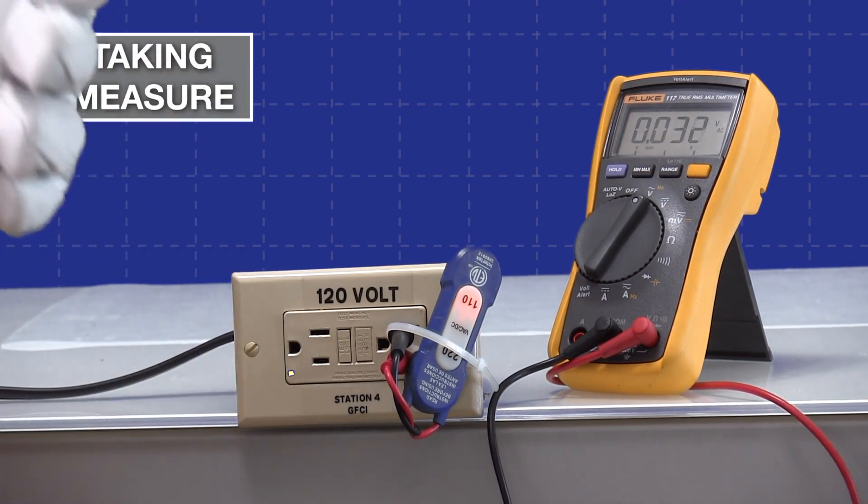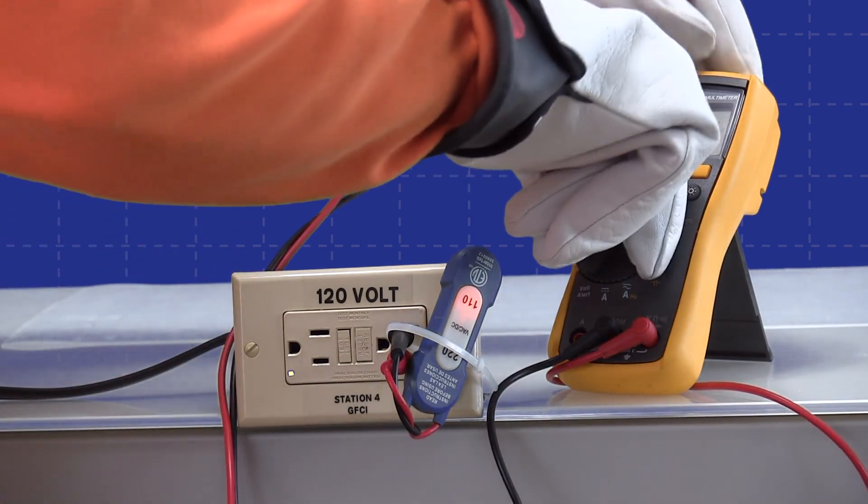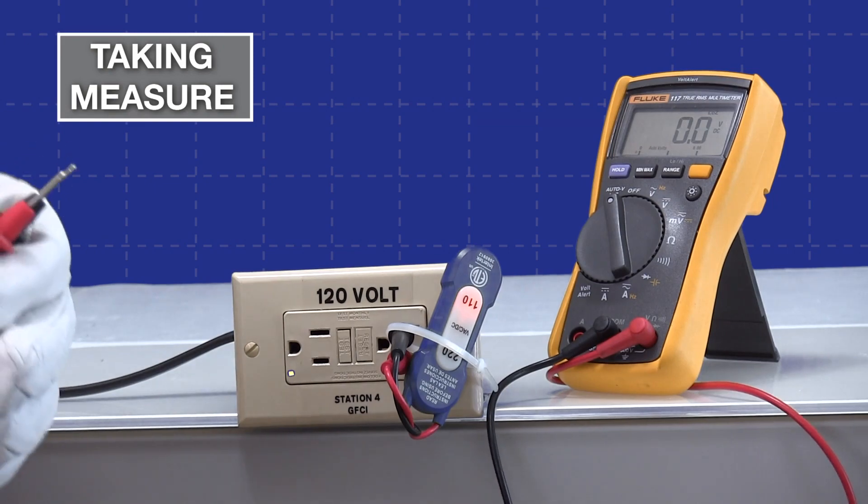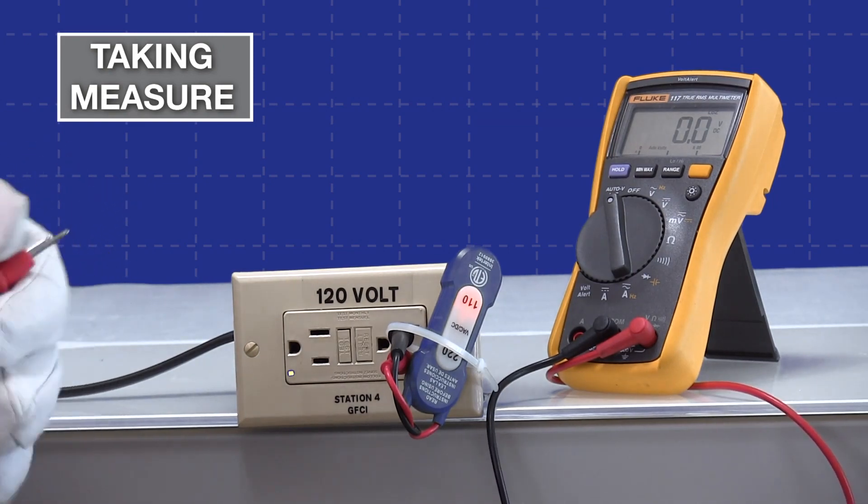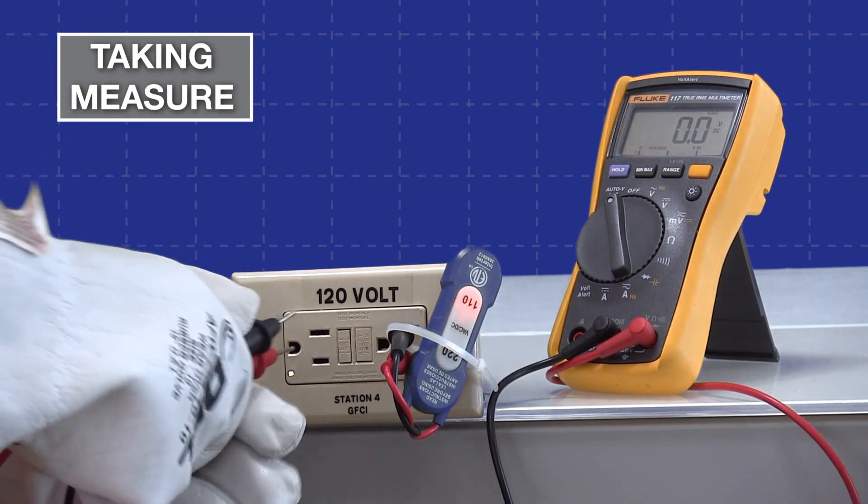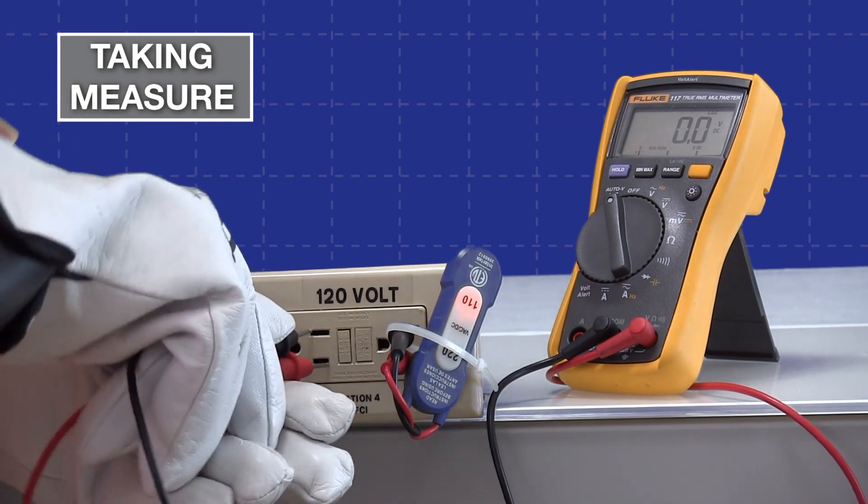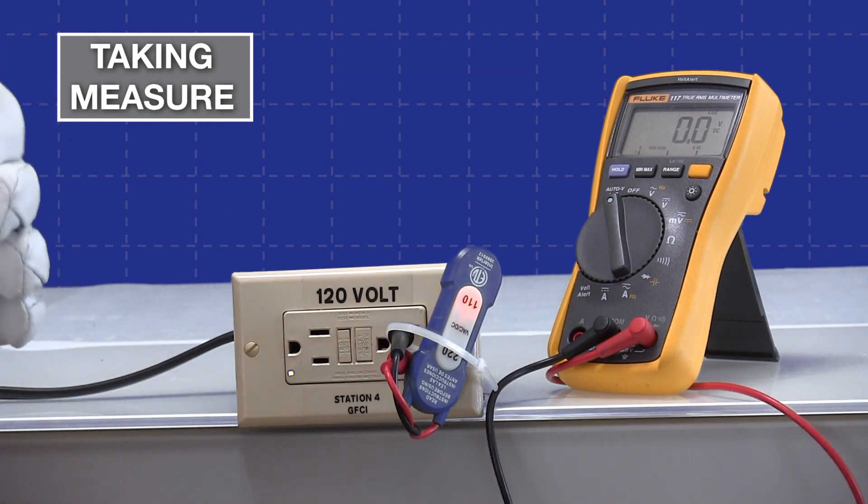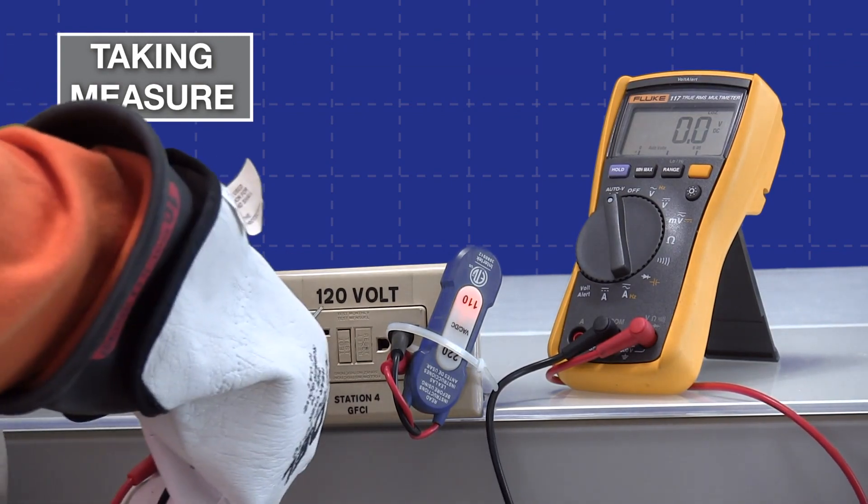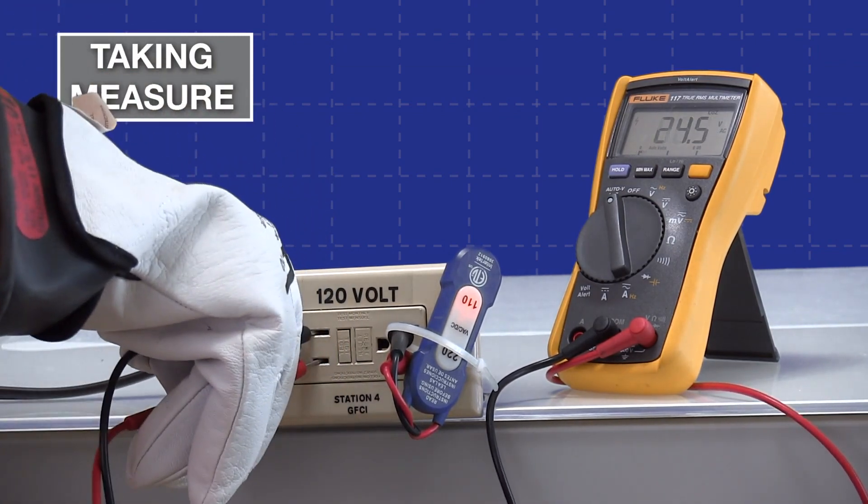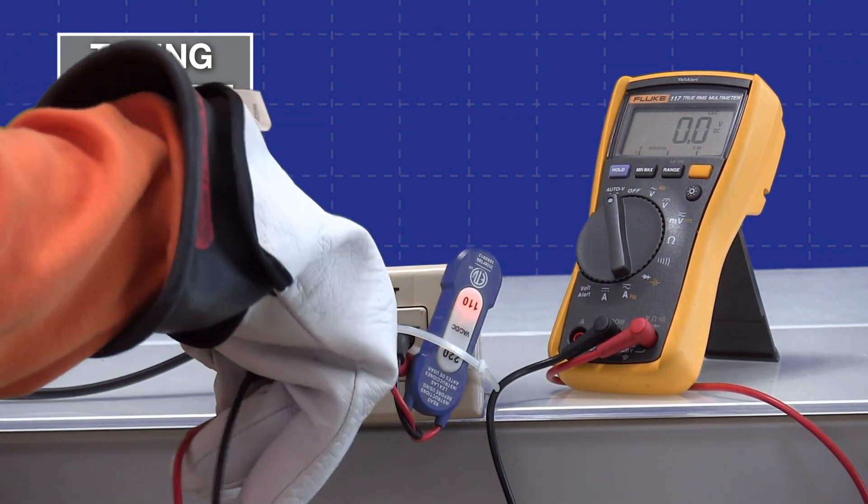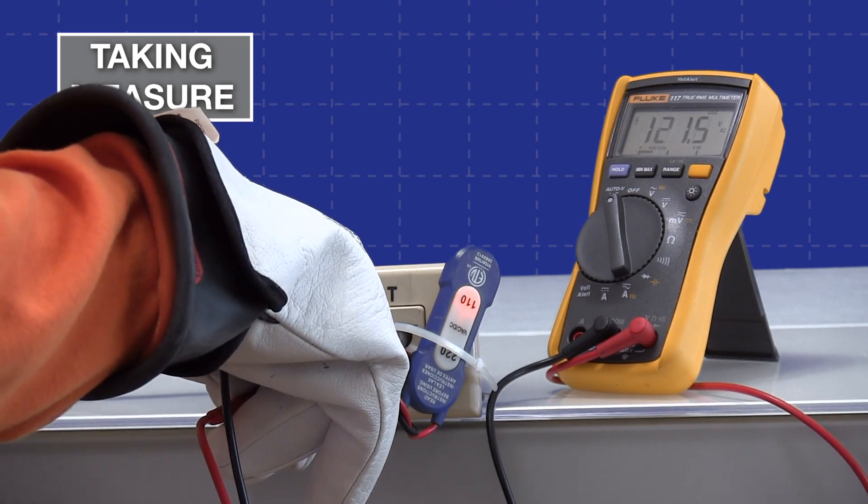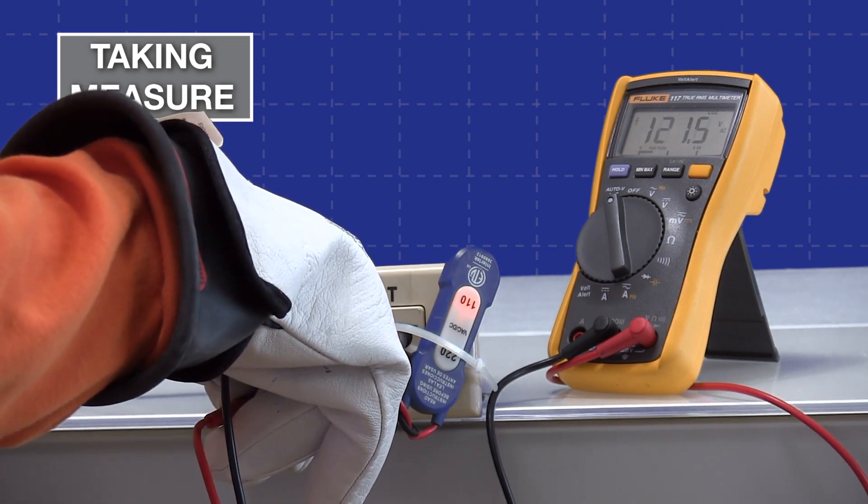Now, I'm going to switch to the low impedance input, and that's over here in this position. Now I went to the low impedance instead of the high impedance, and we'll take a measurement of the circuit again under normal conditions. We have 121.5 volts on that. That worked out fine.